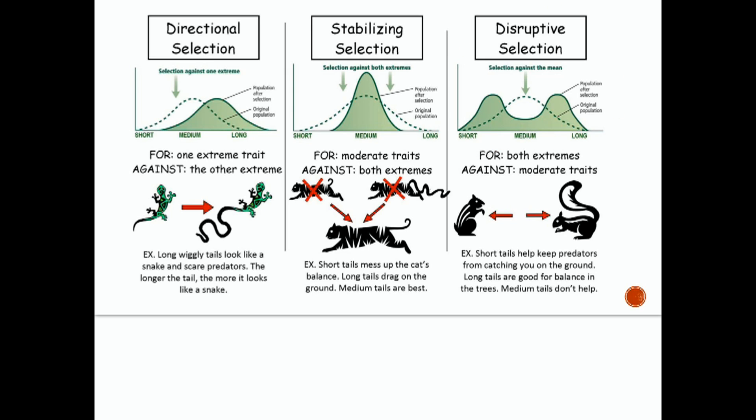Disruptive selection, we are looking at this squirrel and short tails keep predators from catching you on the ground. So they're saying short is good. And long tails are good for balance up in the trees. So it's saying long is also good. And the medium tails don't really help at all. That's disruptive selection.